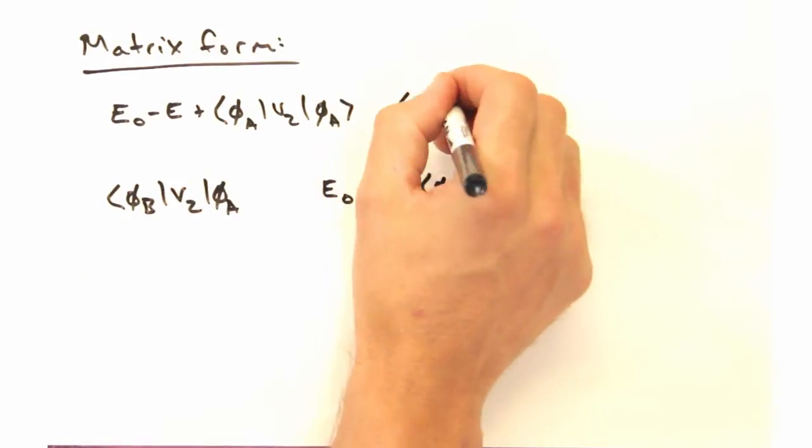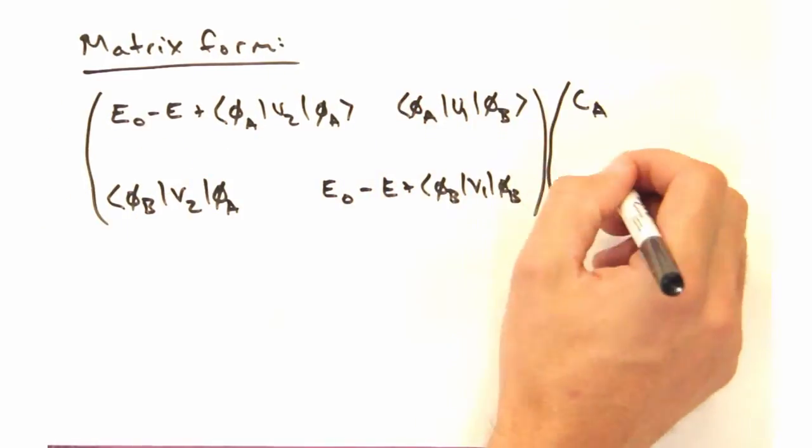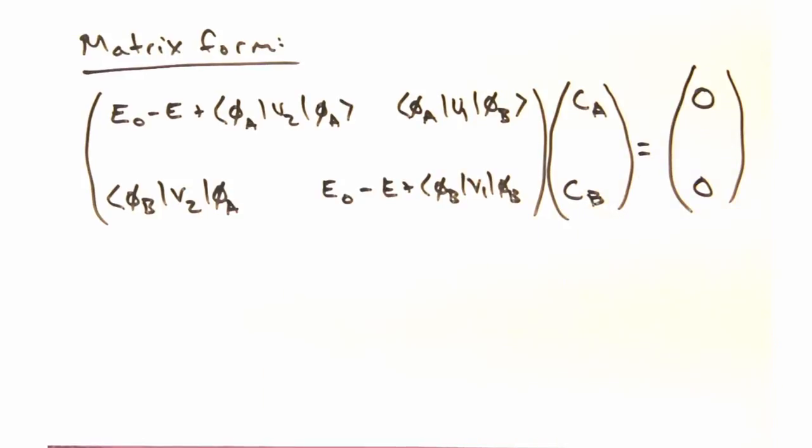Then you can write these two equations in matrix form like this. Hmm, seems like one solution is just to set CA and CB equal to 0. Yes, but in this case you can't normalize the wave function psi, so that solution doesn't make any sense. Hmm, scratch that one then.